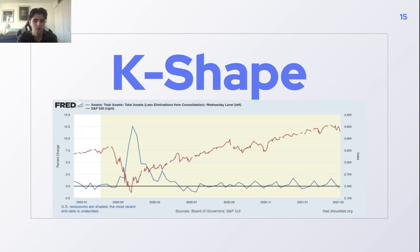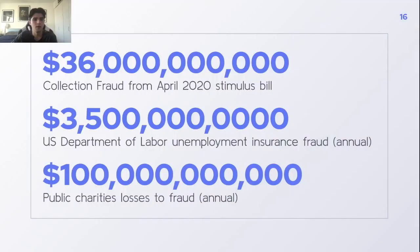We decided there seems to be a large issue with how money is distributed today. We found $36 billion of collection fraud just from the April 2020 stimulus bill. The U.S. Department of Labor estimates they lose about $3.5 billion annually to unemployment insurance fraud, and public charities lose about $100 billion annually to fraud. The system we have today for distributing money and ensuring where that money goes is not very effective or transparent.